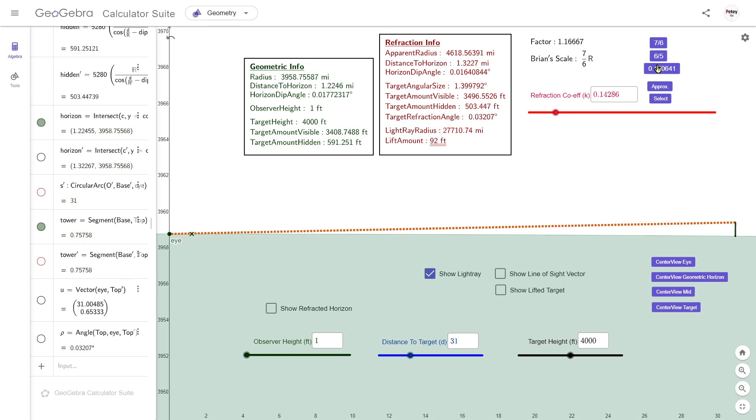The amount by which the radius is scaled up depends on refraction factors such as these. Multiplying the actual radius by a refraction factor such as 7 over 6 gives us an effective radius of 4618 miles. And you can calculate the refraction factor from the refraction coefficient and vice versa.